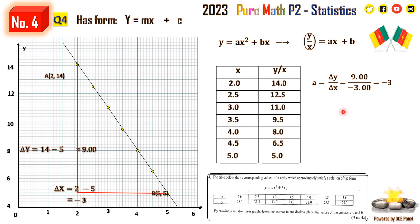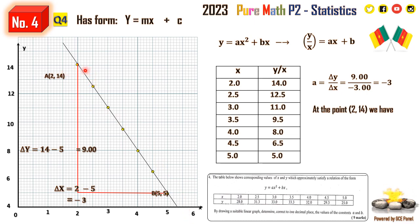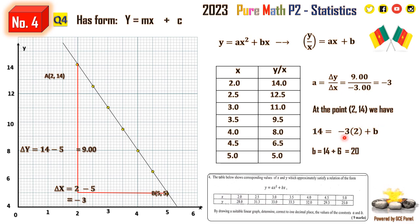Now, to find the value of b, we can take a point along the line and substitute into the equation. At the point (2, 14): 14 equals a times x plus b, so 14 equals negative 3 times 2 plus b. That gives 14 equals negative 6 plus b, and therefore b equals 14 plus 6, which is 20.